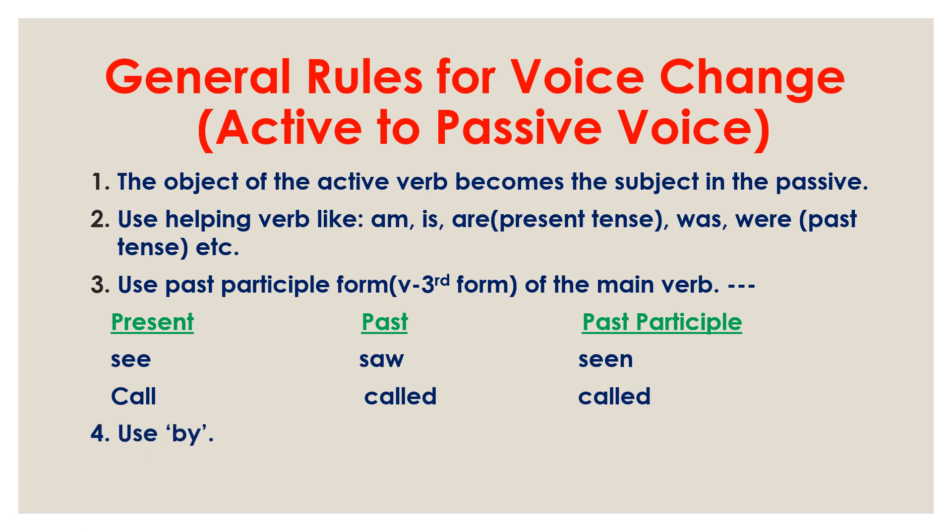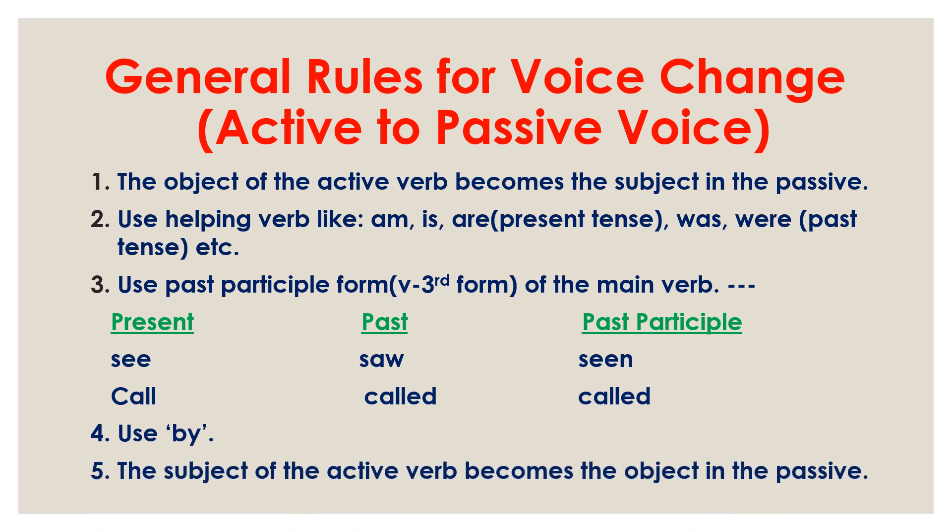Fourth, use 'by'. The subject of the active verb becomes the object in the passive, so after 'by' we need to use the subject, and then any other remaining elements. So the order is: object, then helping verb, then verb third form, then 'by', then subject. This is the general rule for voice change from active to passive voice.